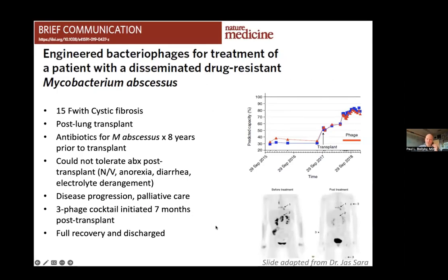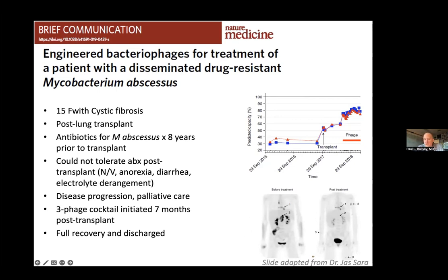These engineered bacteriophages have been shown to work and help folks — not just in vitro. This is a case from a 15-year-old girl who had cystic fibrosis, a genetic lung disease, and was infected with Mycobacterium abscessus for over eight years and ended up having a lung transplant. She couldn't get any more antibiotics because they were too toxic, so she was treated with a cocktail of phage therapy and she did great. Not only did the phages take care of the bacteria in her lung, but they got rid of the bacteria elsewhere in her body — you can see black lesions that ended up going away. That was incredibly exciting and an inspiration for the field.